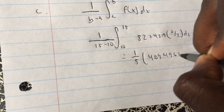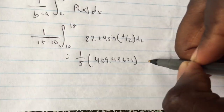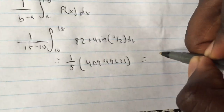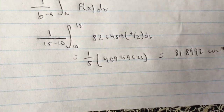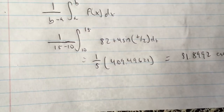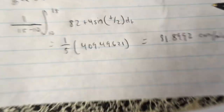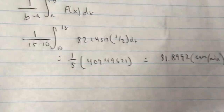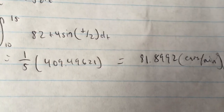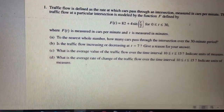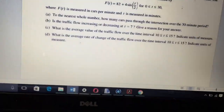This comes out to be 1 over 5 times 409.49621, which equals 81.8992 cars per minute. That is the average value of the traffic flow, which is 81.8992 cars per minute.